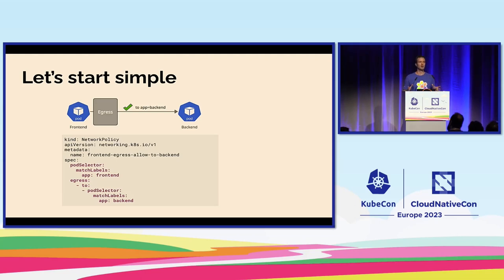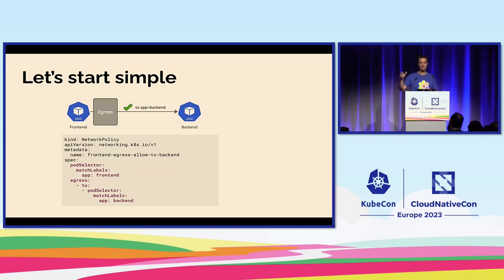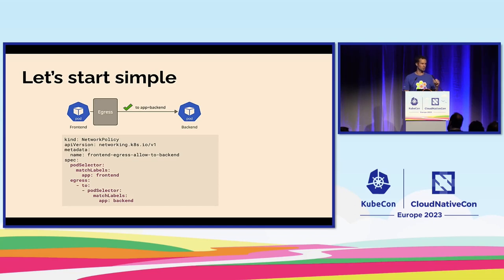This policy — for those of you who have used this before, it will look very simple. We're allowing the frontend pod to talk egress — outgoing egress. In networking, people call egress the outgoing side and ingress the incoming side. So we are creating a policy that the frontend pod is allowed to talk to the backend pod.